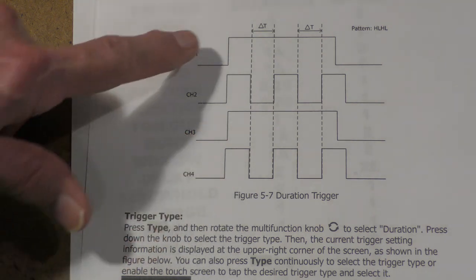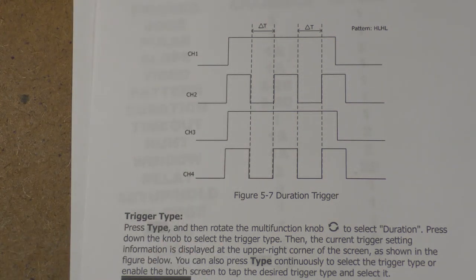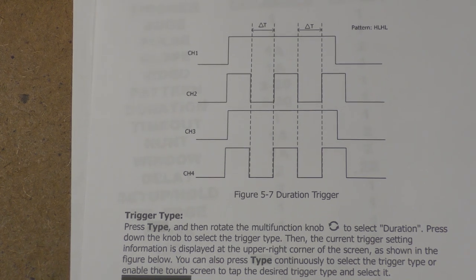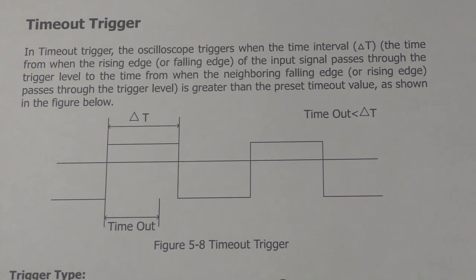So you can turn on all the channels and then essentially ignore all those you don't want to look at by setting them to don't care. So you set a pattern, you set a duration, and it will trigger on that. We'll look at that later when we start doing actual embedded debugging. But that is the duration trigger and in essence it's the same as the pattern trigger, which like I say we'll look at in a future video.